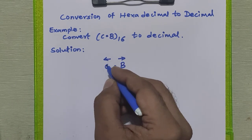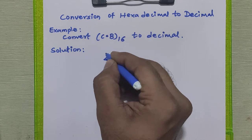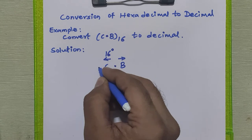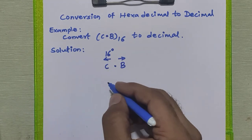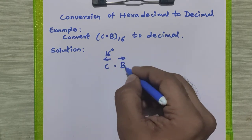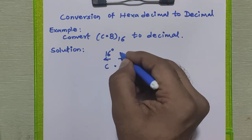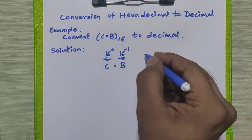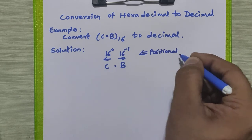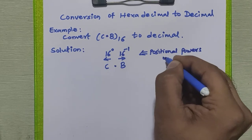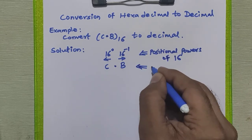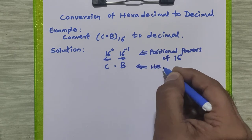C is appearing at the unit place, so the positional power of 16 for C is 16 raise to 0. If there are further more bits, it would be 16 raise to 1, 16 raise to 2, and so on towards the left-hand side. For the fractional part, there is only one digit, and the positional power of 16 is 16 raise to minus 1. These are the positional powers of 16 for this hexadecimal number.